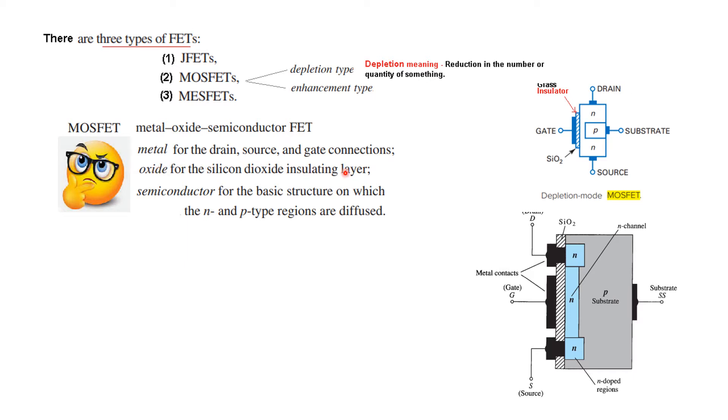Oxide for the silicon oxide insulating layer. Now this layer here you can see is the glass or insulator which is also silicon dioxide. So this is an insulating layer that means the gate and the channel does not have any electrical contact because there is an insulating layer in between.